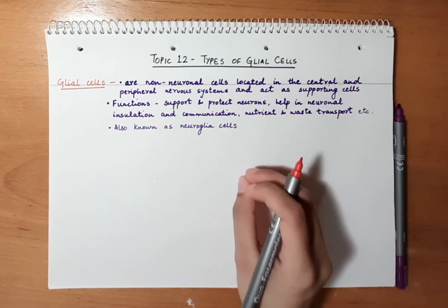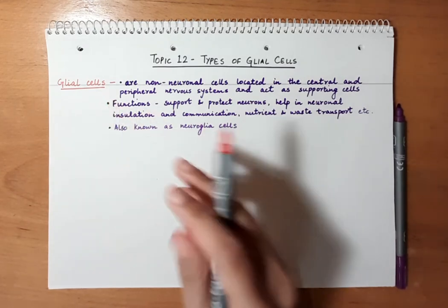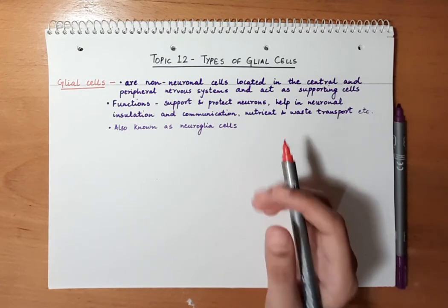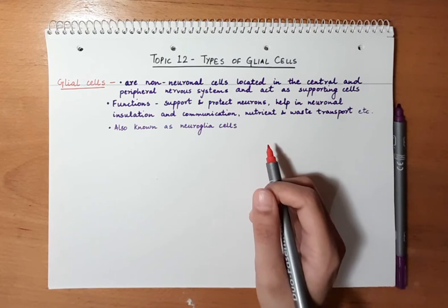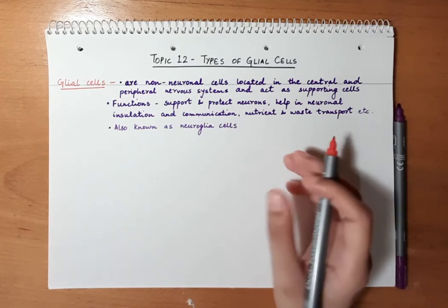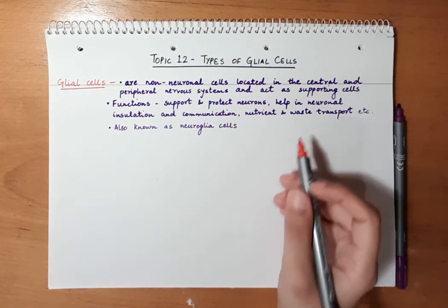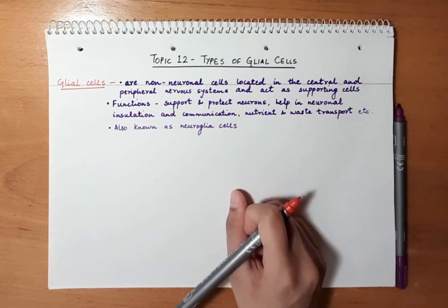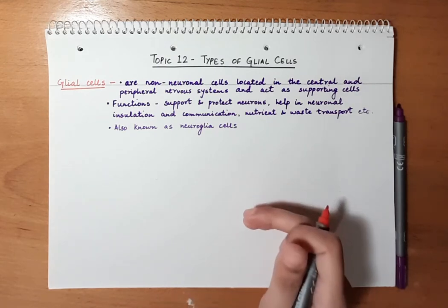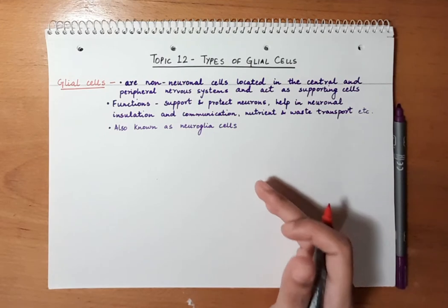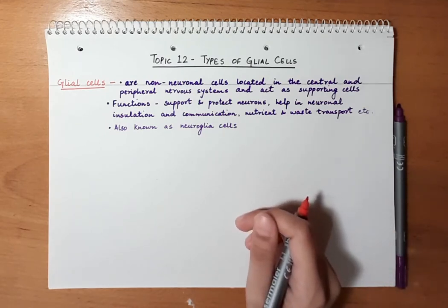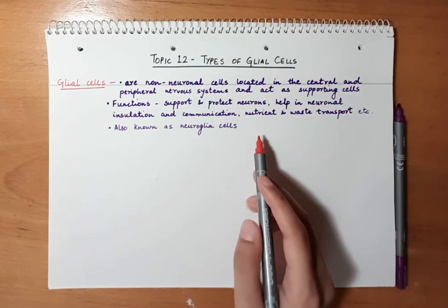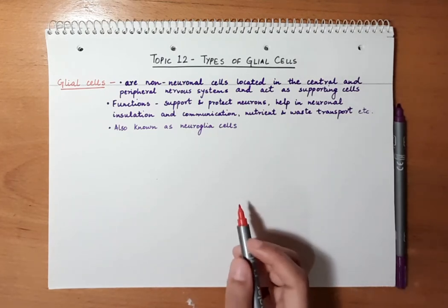The myelin sheath which surrounds the neurons is actually made by glial cells — a particular type of glial cell makes the myelin sheath, which helps in proper communication and neuronal signaling. Apart from that, they also help in the transport of nutrients and waste. Each type of glial cell has its own specific main function as well, which we will discuss later. Glial cells are also known as neuroglia cells.